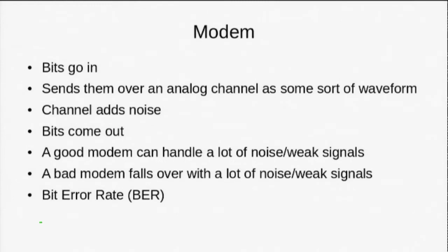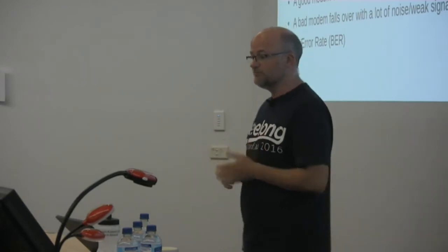The modem: bits go in — ones and noughts from your protocol layer — and the idea of the modem is to send them over the analogue channel as some sort of waveform. The channel adds noise and various other impairments and tries to corrupt your bits. If it's a really good modem and a really good channel, the same bits that come out are the ones that went in, but usually we get some errors. The way we measure that is with something called a bit error rate — if you send 100 bits and one bit is in error on average, that's a 1% bit error rate.